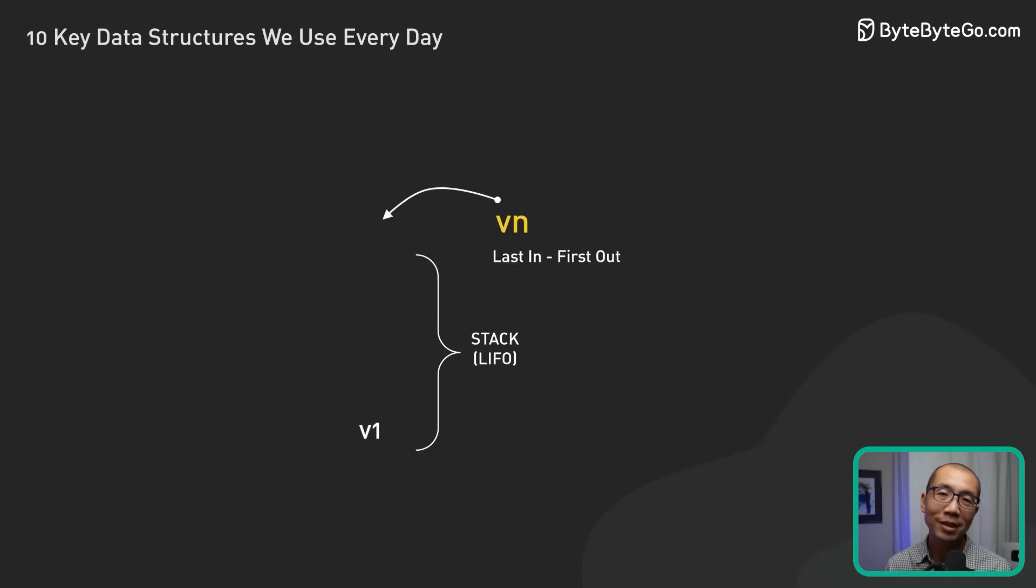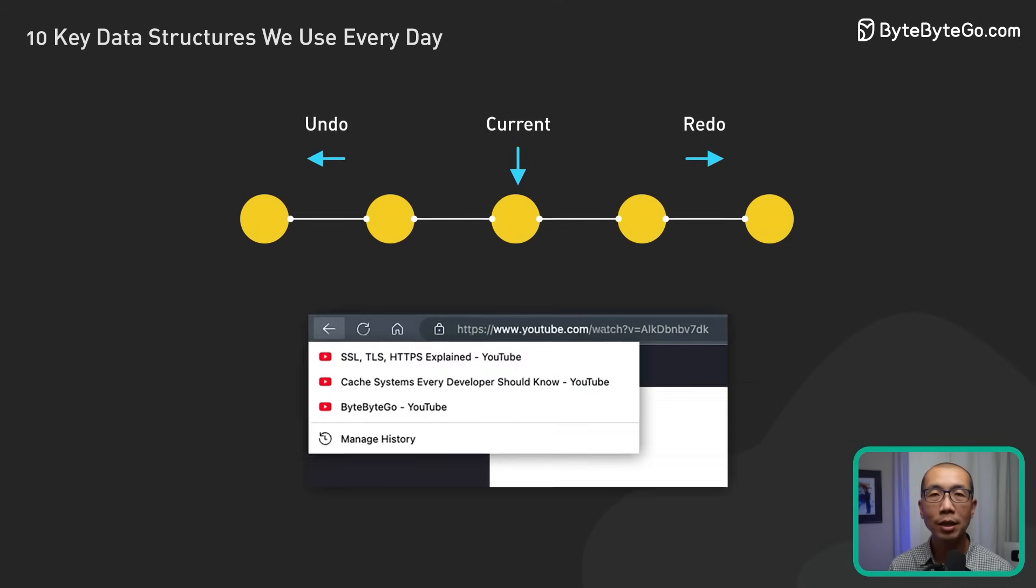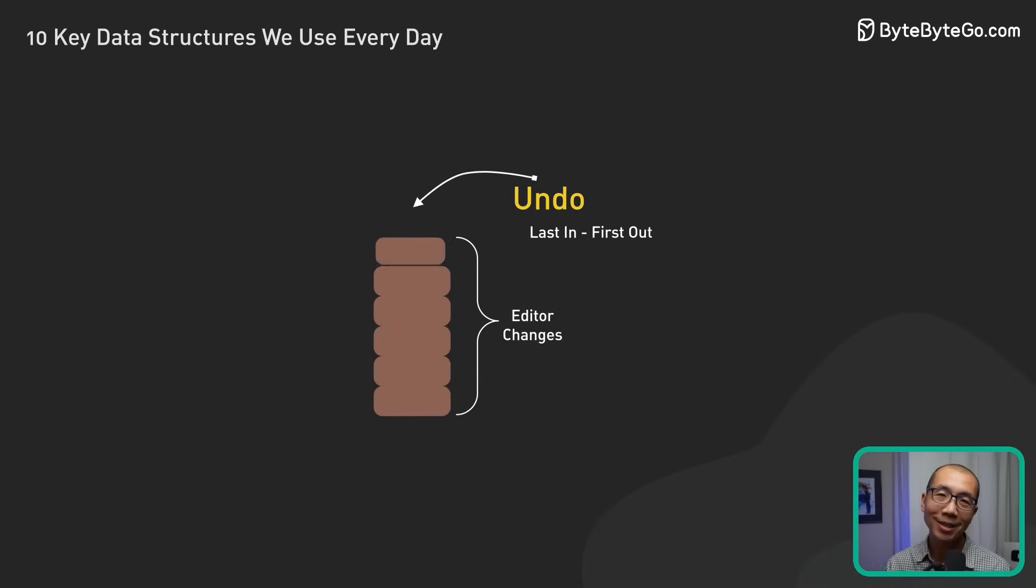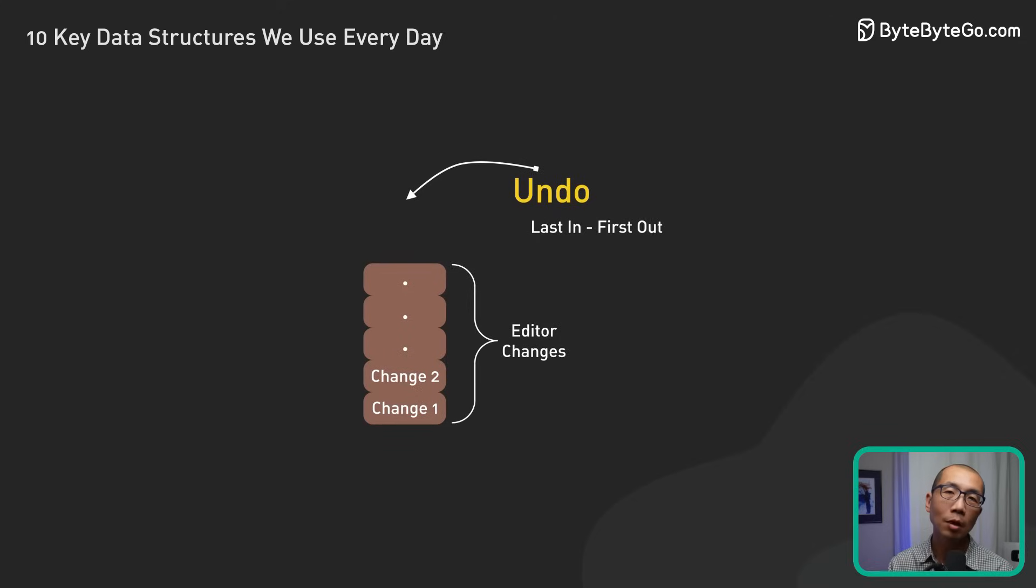Next, we have stacks. Stacks follow the last-in, first-out principle. They are perfect for supporting undo and redo operations in text editors or maintaining browsing history in web browsers. In a text editor, a stack can be used to store each change made to the text, making it simple to revert to a previous state when the user triggers an undo operation.